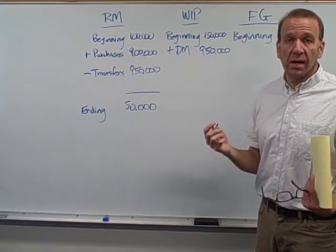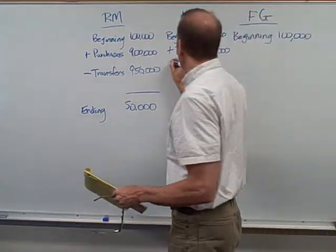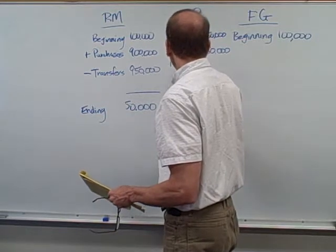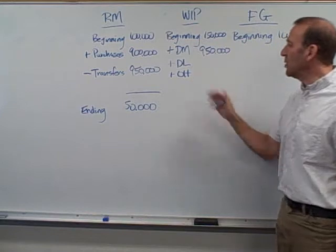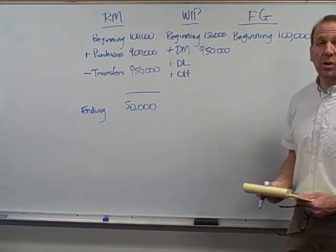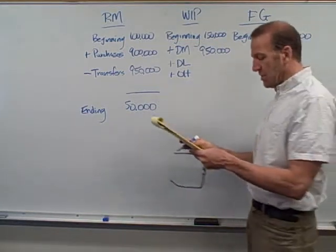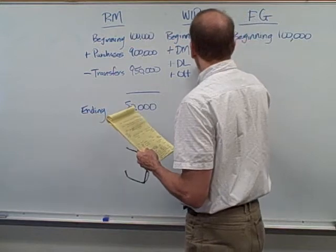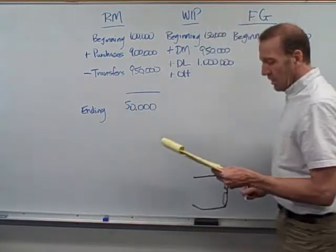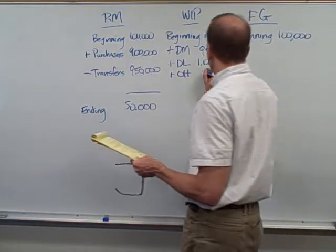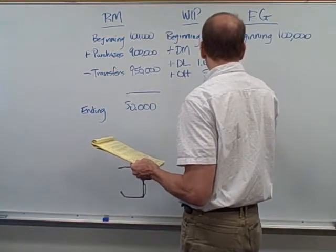Well, our conversion costs, remember from our previous video, conversion costs will go in here. Our direct labor plus our manufacturing overhead or factory overhead, those costs will also go in there. So let me just put some numbers down here. Let's say our labor for this time period is a million dollars of labor. And let's say our overhead is a half a million, 500,000.